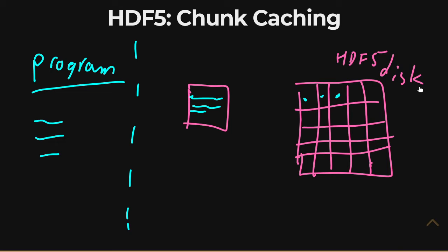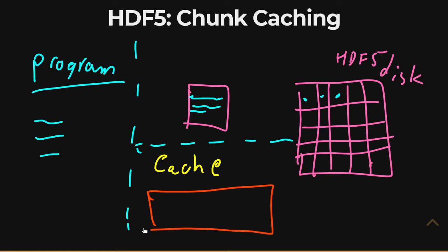Instead, what can be implemented is the concept of a chunk cache. The chunk cache is an HDF5-managed memory cache that lives with HDF5 and simplifies the way in which reads and writes can occur. It defines a set of memory where individual chunks can be copied into when read or written to, and these stay in RAM. Reading from RAM is extremely fast, whereas reading from disk is much, much slower.